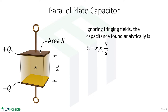Let's start with the analytical solution for a parallel plate capacitor. The top plate carries a charge of plus Q, the bottom plate carries minus Q. Between the plates is a dielectric medium with permittivity epsilon, and the plates are separated by a distance D. We're assuming these are square plates of surface area S. In prior videos, we derived the capacitance of this structure.